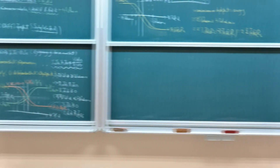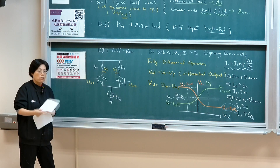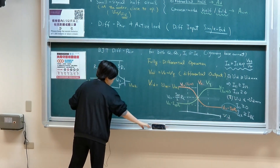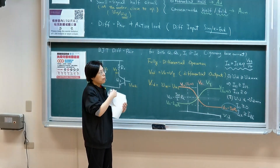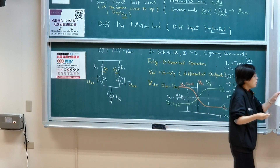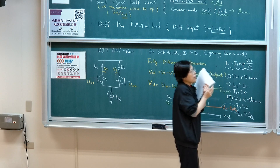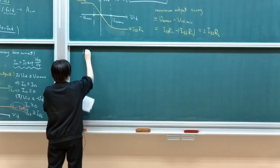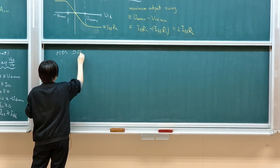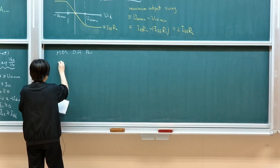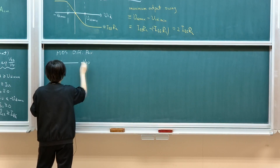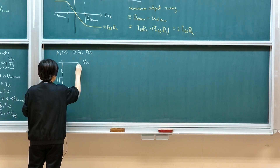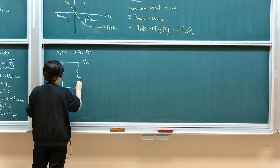This is a review of what we've already discussed — the large signal analysis of a bipolar differential pair. Now let's look at the MOSFET version. For the MOS version, it's actually very similar, but you can adjust the input operation range. Let's talk about the MOS differential pair.